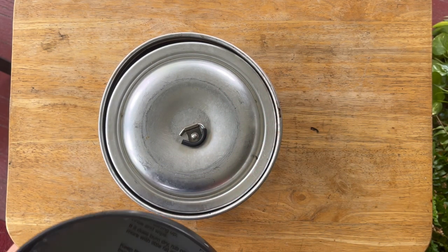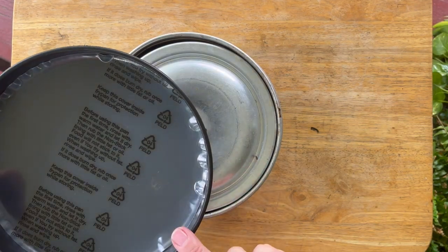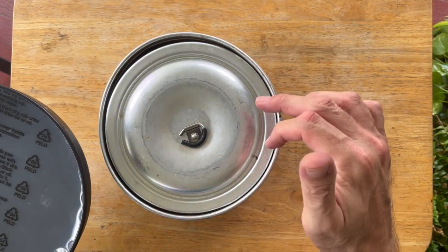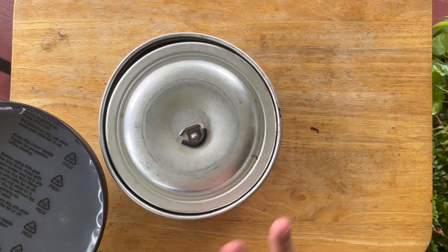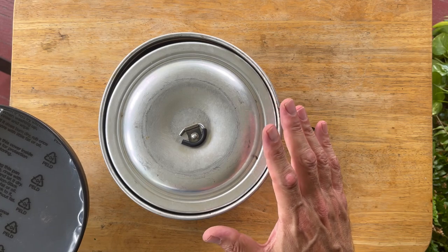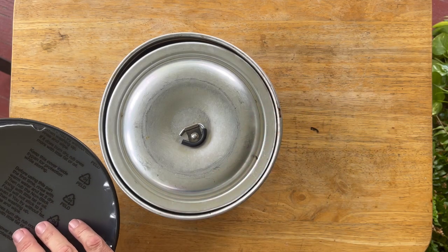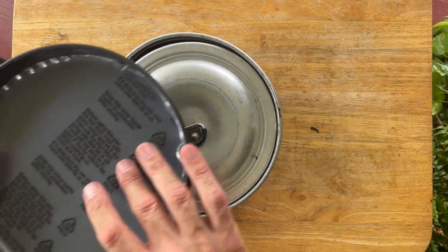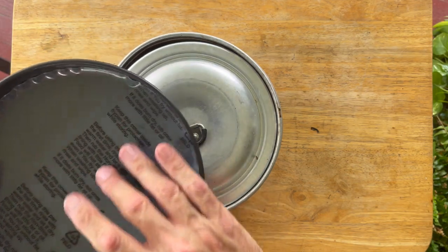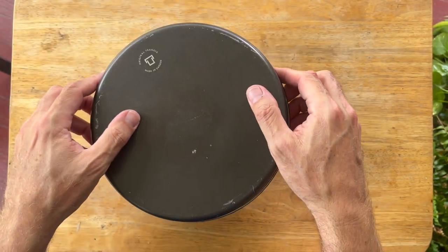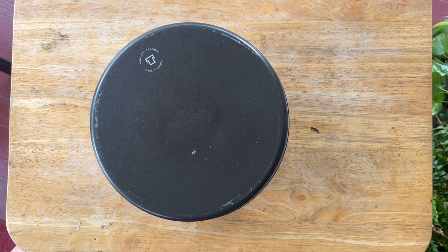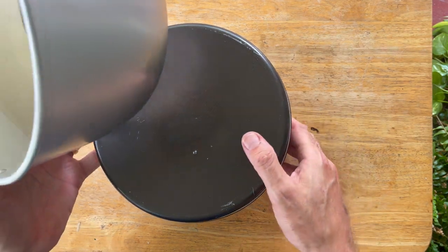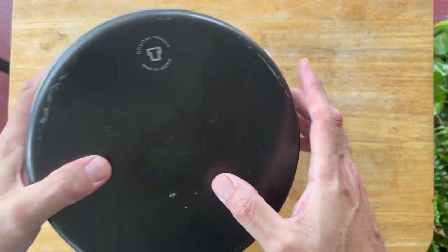And then finally, I've got my nonstick. The rest of them, the two pots are hard anodized, because sticking is not such an issue since it's usually liquid in there. But for the skillet, I prefer to use nonstick. You got your little piece of plastic in there, and then the whole thing is going to fit inside the billy pot.